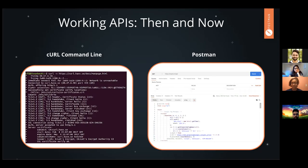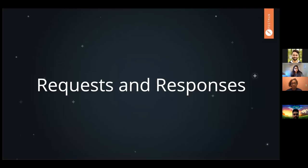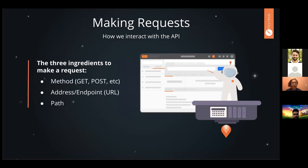Requests are how we interact with the API. There are three main ingredients to make a request. You need your HTTP methods — these are basically actions or verbs telling the API what we're planning on doing. We have our endpoint, which is often a URL — you can think of it as an address. And then we have our path, which is the specific place within that endpoint that can execute the method that you're requesting.